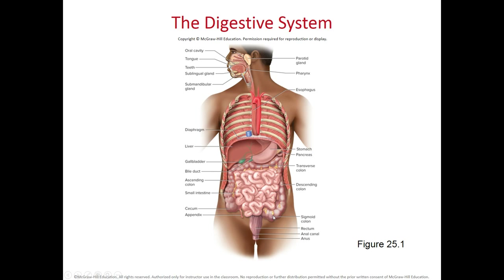The first part of the large intestine is the cecum — correction: the ileum is the last portion of the small intestine, and the ileocecal valve is on the right side. The first portion of the large intestine is the cecum. The ileocecal valve prevents the backing up of feces from the large intestine into the small intestine. Just next to the cecum, we have the appendix.